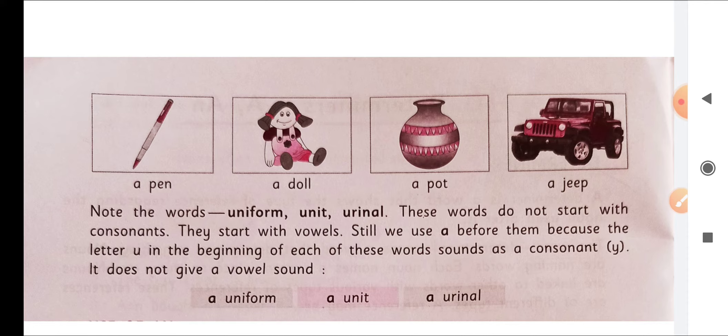Note the words uniform, unit, urinal. These words do not start with consonant. So they start with vowels. Still we use a before them because the letter U in the beginning of each of these words sounds as a consonant Y. It does not give a vowel sound.